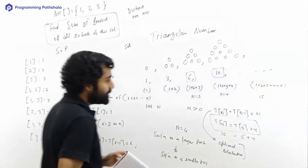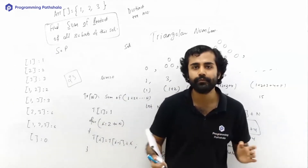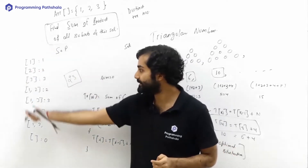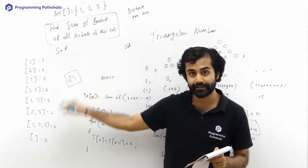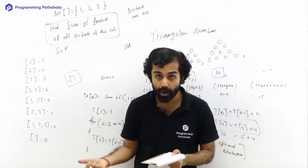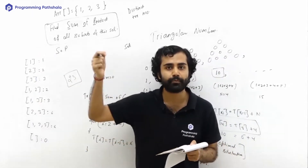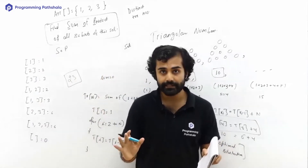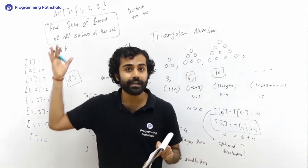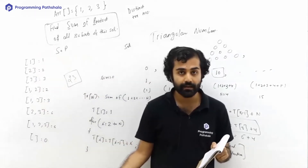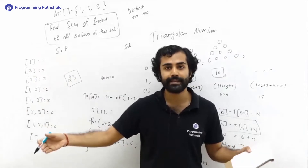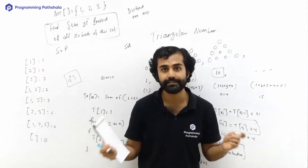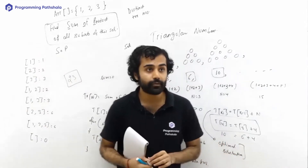What's the brute force approach? The easiest way is to generate all subsets using recursion, find each product, and keep adding to a global answer. But that will be exponential — O(2^n) — and will definitely give Time Limit Exceeded if n is large. Can we do something better?